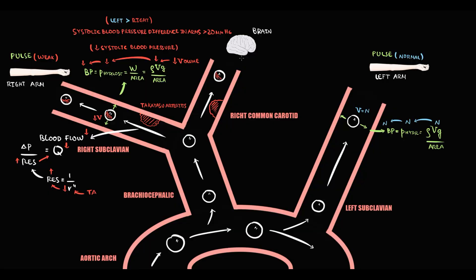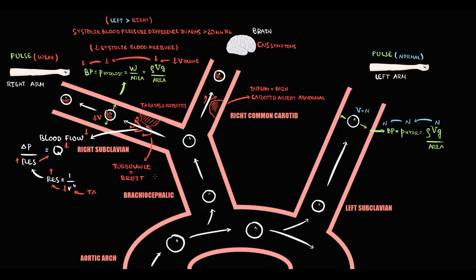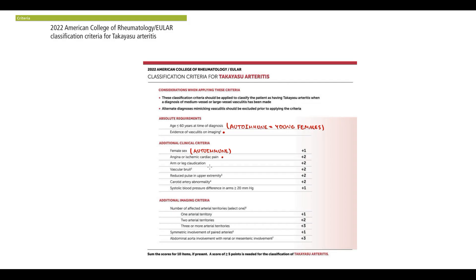This will cause a decrease in blood supply to the brain, which will immediately cause CNS symptoms. Local inflammation also causes local pain, and inflammation causes an increase in white blood cells and erythrocyte sedimentation rate. The architecture of the artery changes with inflammation, and from physics, any obstruction to blood flow creates turbulence. Turbulence creates a sound that we call a bruit. So Takayasu Arteritis will cause a bruit in the right subclavian artery and right common carotid artery. This is important because the classification criteria include arm or leg claudication, reduced pulse in upper extremities, systolic blood pressure difference, vascular bruit, and carotid artery abnormality — all signature clinical symptoms of Takayasu Arteritis.